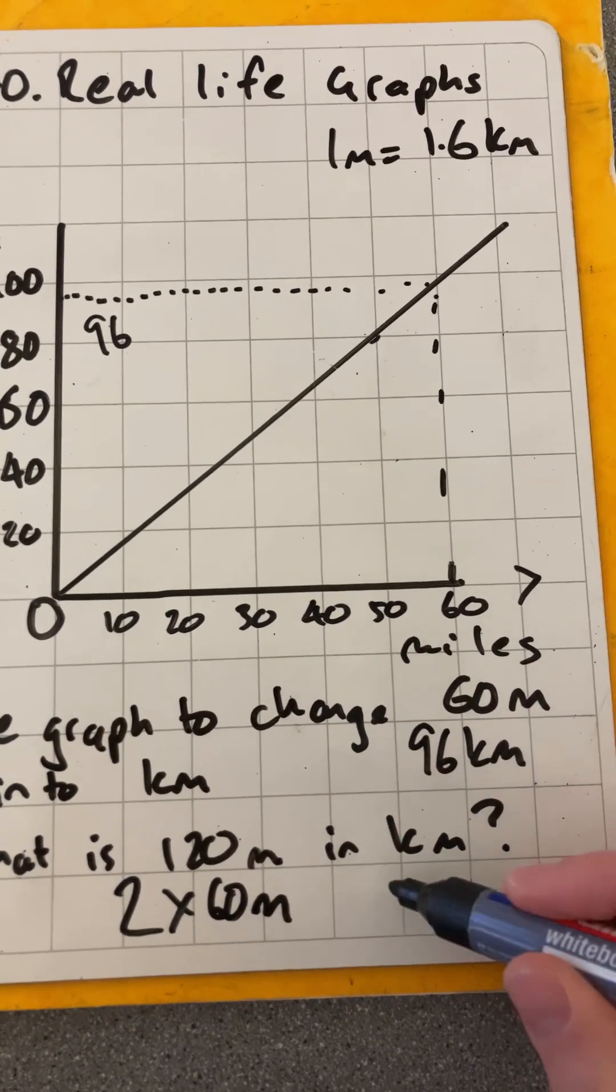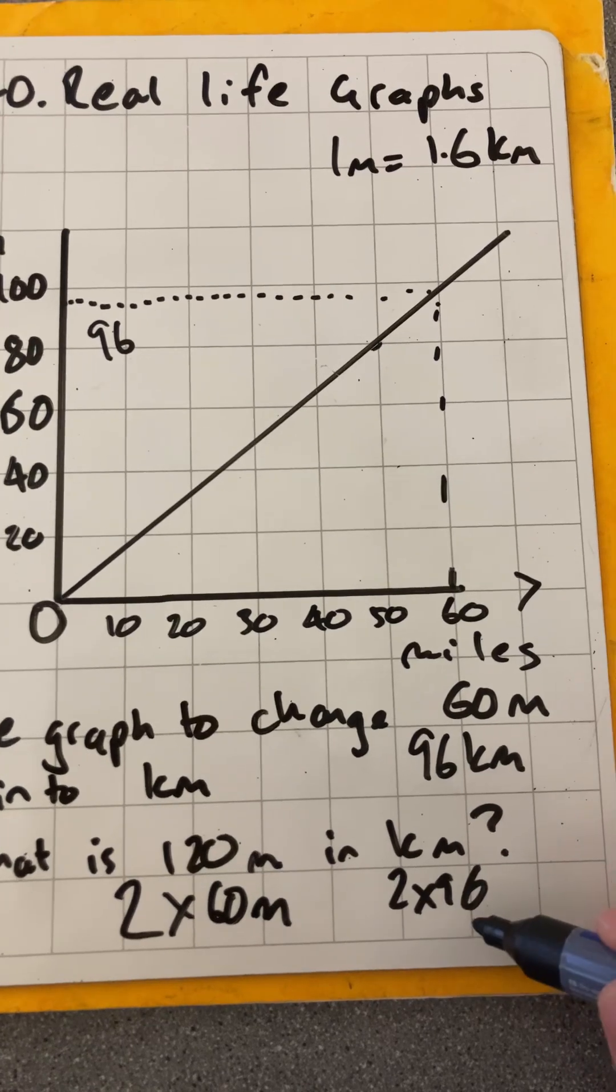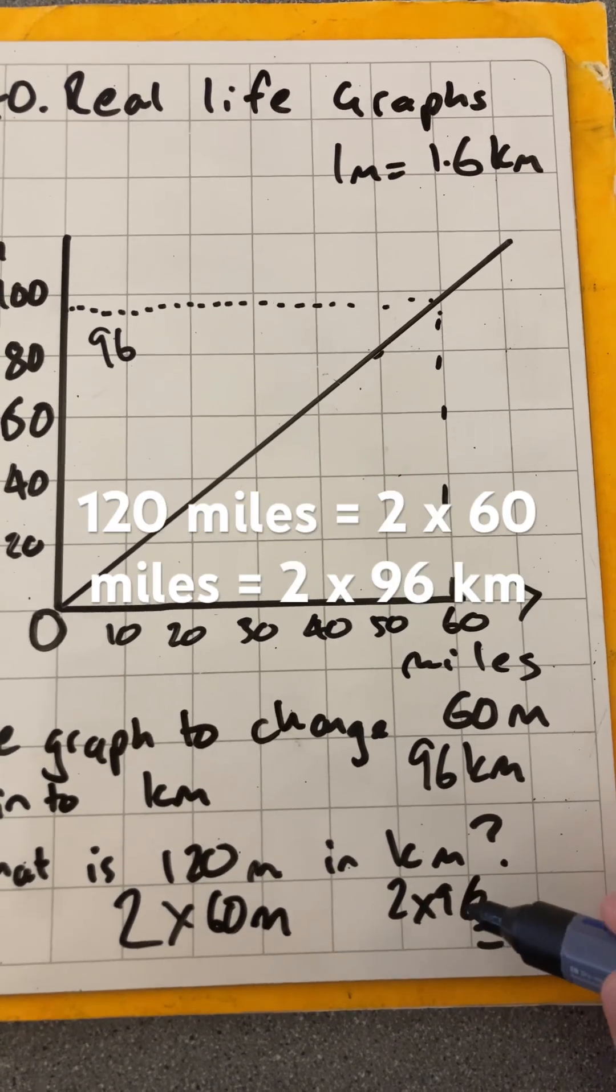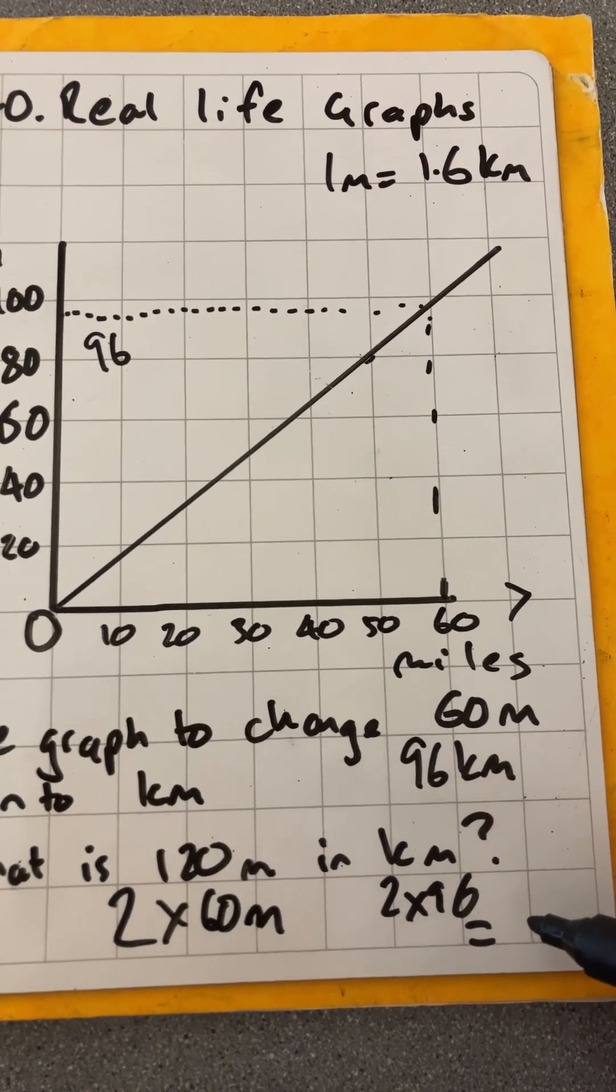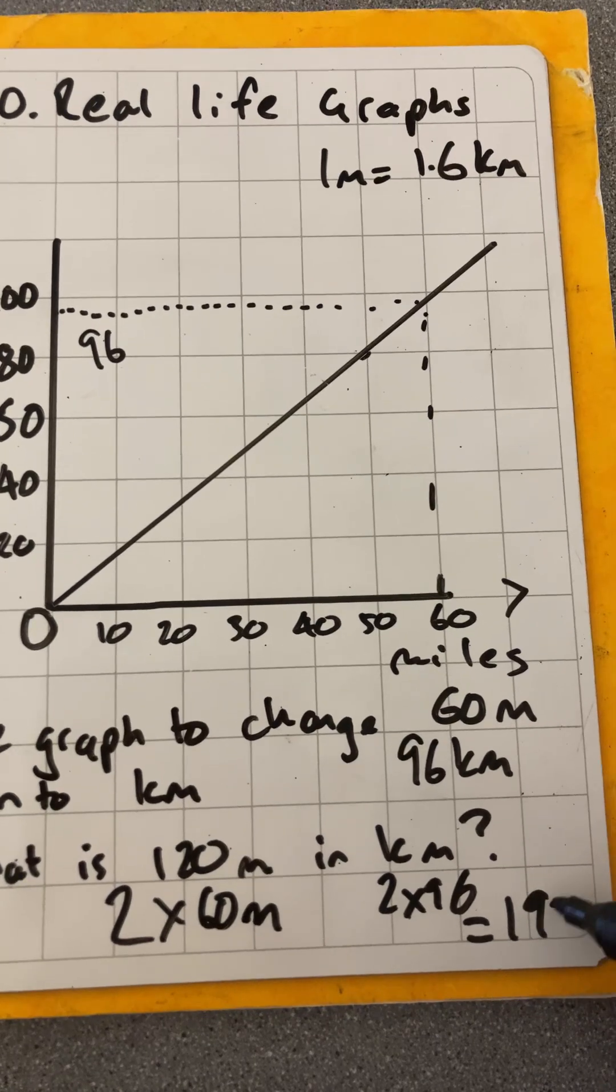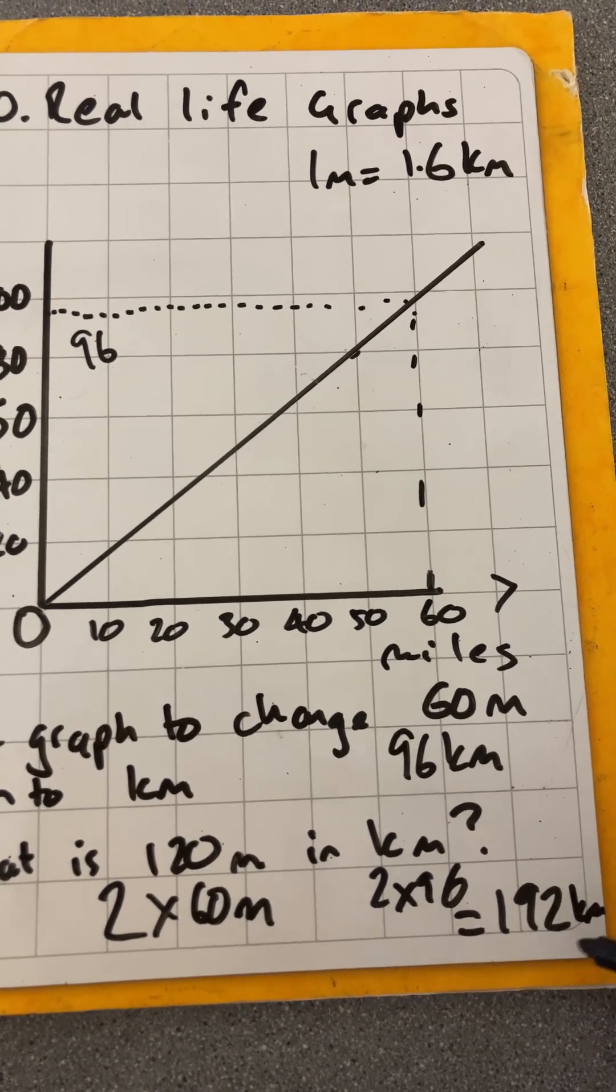So I just need to do 2 times 96 kilometers, which is 180 plus 12, which is 192. So 192 kilometers there.